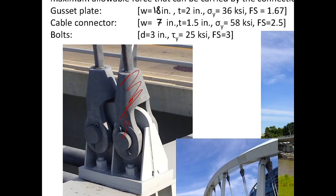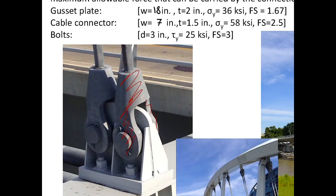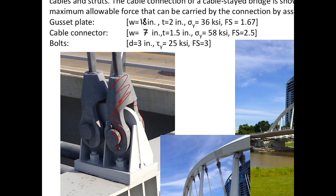The cable connectors — one on each side — are 7 inches wide with a 1.5 inch focus. They yield at 58 KSI, which is a stronger material, but the required factor of safety is higher at 2.5. The bolts — one on each side — have a diameter of 4 inches. The welding stress is 25 KSI and the required factor of safety is 3.